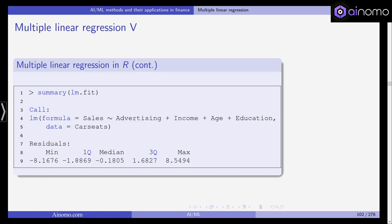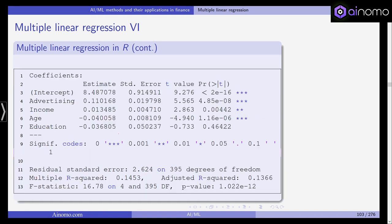By using the summary command on LM.fit, we can see the result. The function call was sales explained by advertising, income, age, education using car seats data. The residuals are shown here: the median, first quartile, third quartile, minimum and maximum residuals after fitting the model. These are the coefficient estimates: the intercept, advertising. This is beta 0, this is beta 1 and 2, 3 and 4. You can see the estimates for the coefficients, their standard errors, T values.